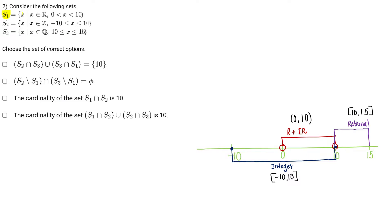S1 has all the values of X which are real numbers and satisfy this equation. If I am drawing the graph or diagram of it, I will get this red line as set S1. Remember that real numbers are involved, so in S1 I have rational and irrational numbers both. 0 and 10 are excluded because it is a not-equal-to sign.